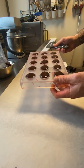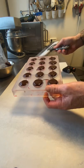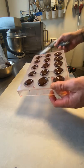Hit the outside with the scraper to remove air bubbles, turn the mould upside down, let the chocolate run out, scrape and then you should have shells.